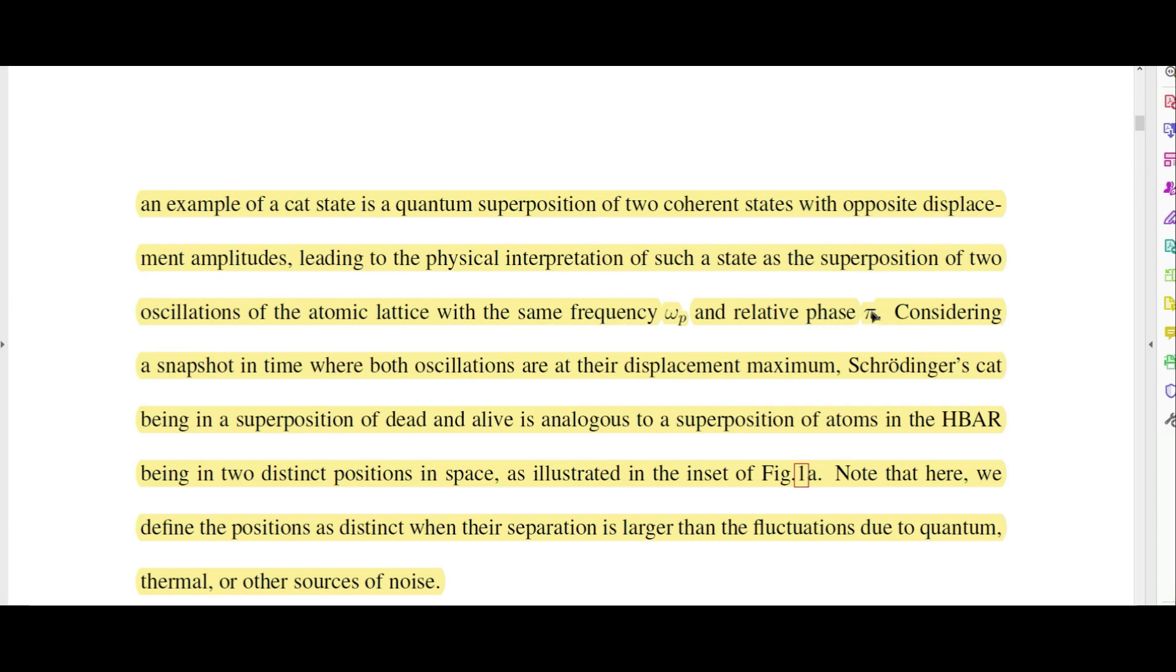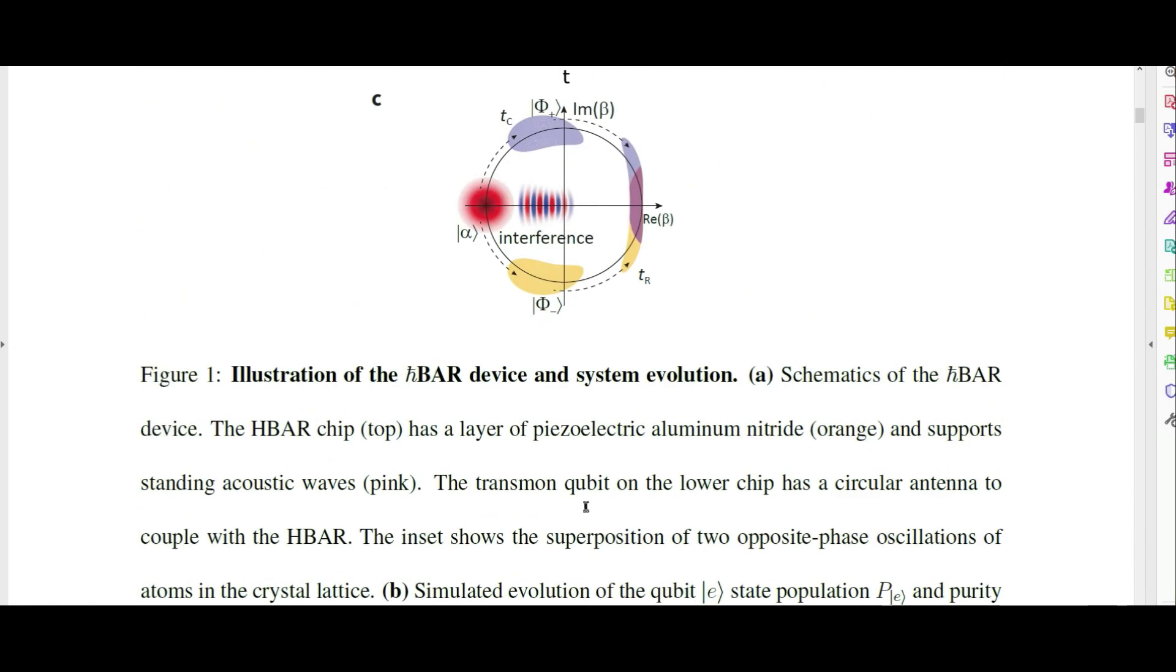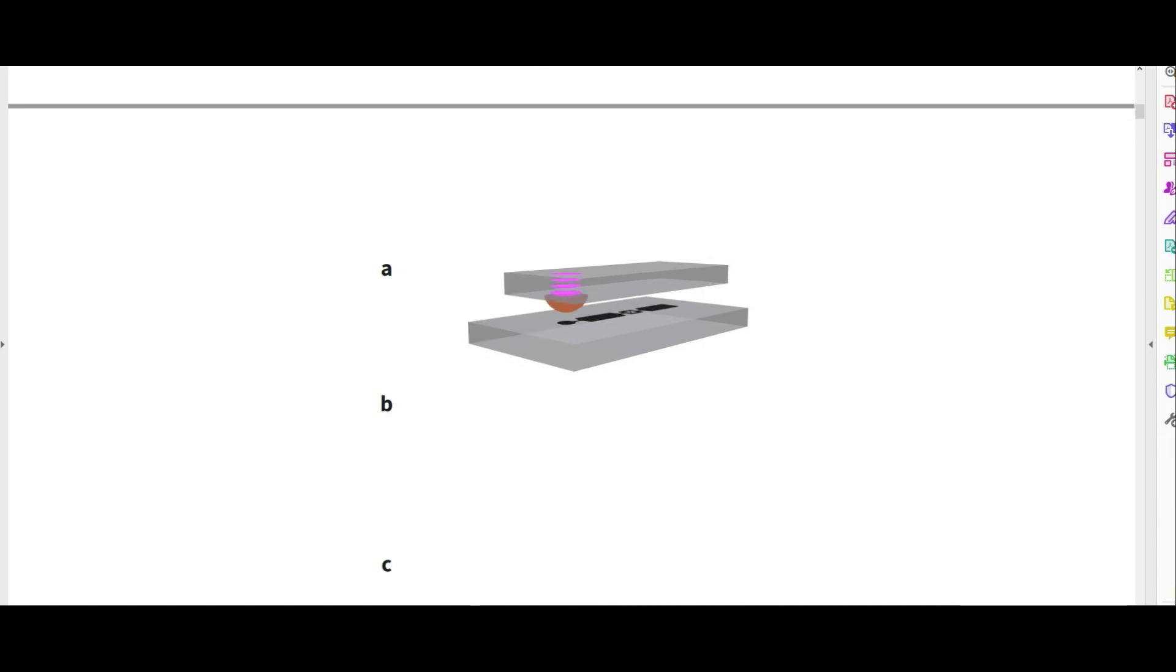They're saying it will have the same frequency but they will be 180 degrees out of phase from each other. When one is at the crest of its wave, the other one will be at the trough of its wave. Considering a snapshot in time where both oscillations are at their displacement maximum, Schrödinger's cat being in a superposition of dead and alive is analogous to a superposition of atoms in the HBAR being in two distinct positions in space, as illustrated in the inset of Figure 1a. Note that we define these positions as distinct when their separation is larger than the fluctuations due to quantum thermal or other sources of noise.